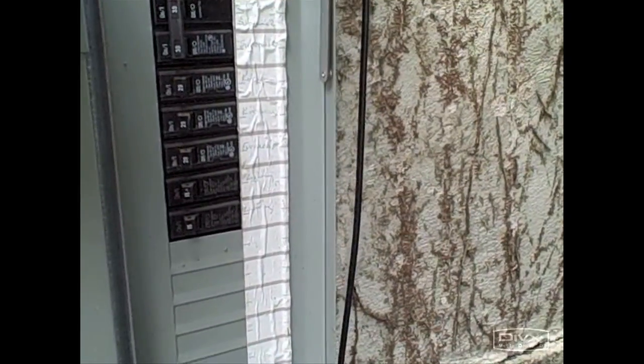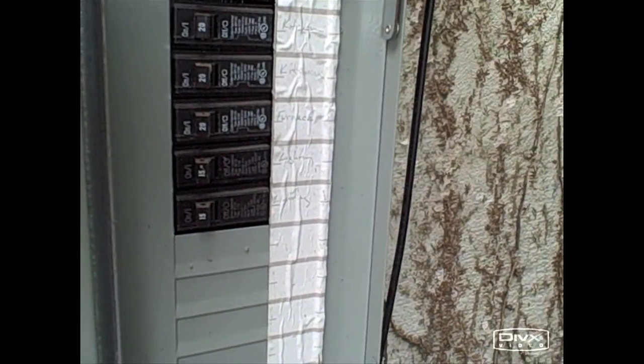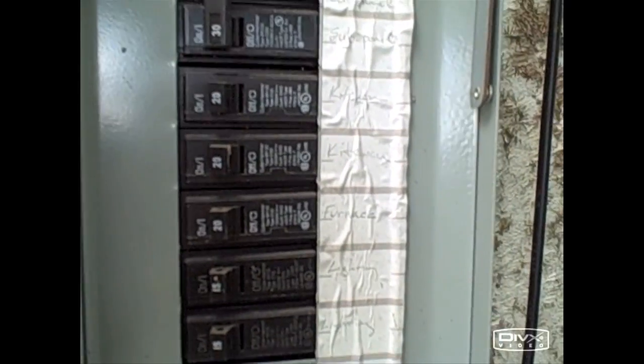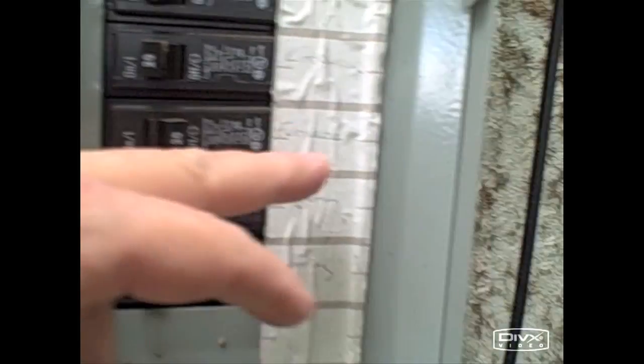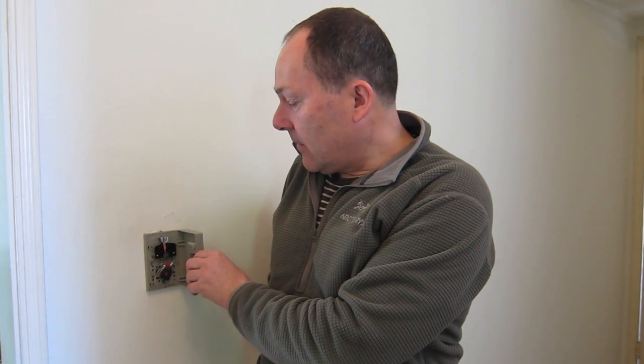Before we do anything and before we disconnect any wires the first thing we want to do is shut off the furnace. Here we are over at the main circuit panel and we want to turn the furnace off. Thankfully it's marked right here so that cuts the power. I'm going to go ahead and remove this thermostat.